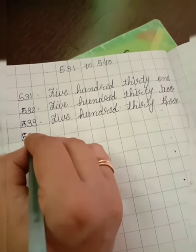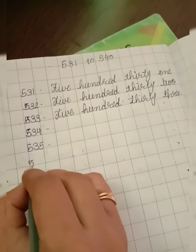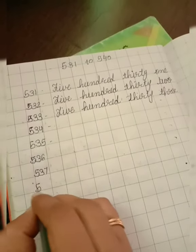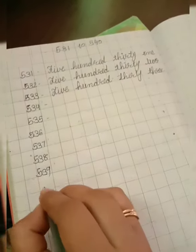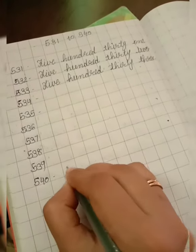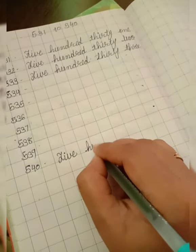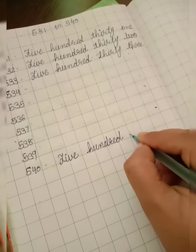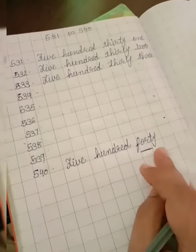Now you can write the same way: 534, 535, 536, 537, 538, 539, and 540. 540's spelling I will write: F-I-V-E 5, H-U-N-D-R-E-D 100. 40 ka spelling hota hai F-O-R-T-Y 40. This spelling bachyo khas aapne mind me rakhna.